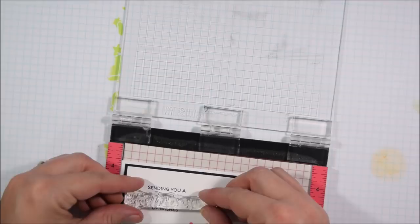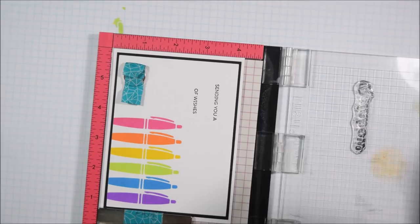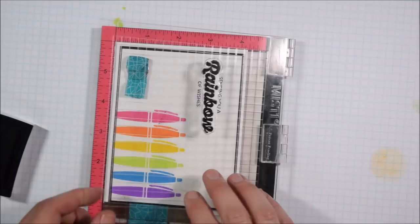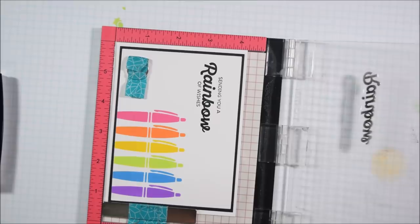I'm also using a stamp positioner tool because with this particular set you can put the word rainbow or rainbows in between a lot of sentiments so they're not actually attached, it's not one whole sentiment, instead you have to stamp it in there so I chose to phrase it as sending you a rainbow of wishes.